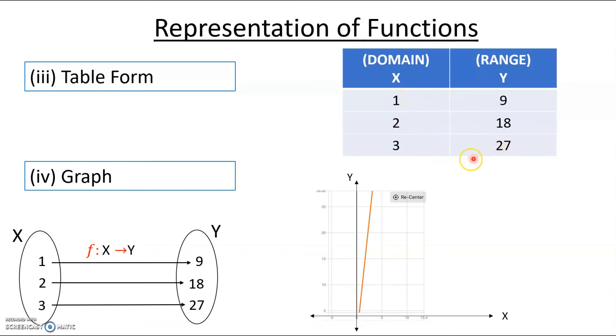The last one is you can have them in the form of a graph with your x-axis with the domain and y-axis as the range. You mark the points (1,9), (2,18), (3,27). If you connect them it'll be a straight line in this case. This is a form of graph representation.